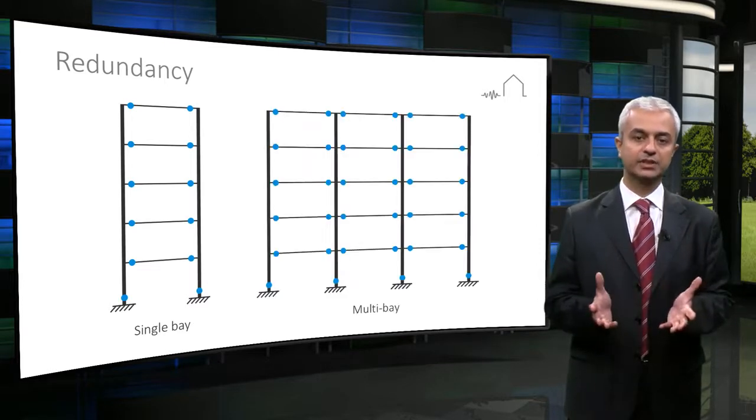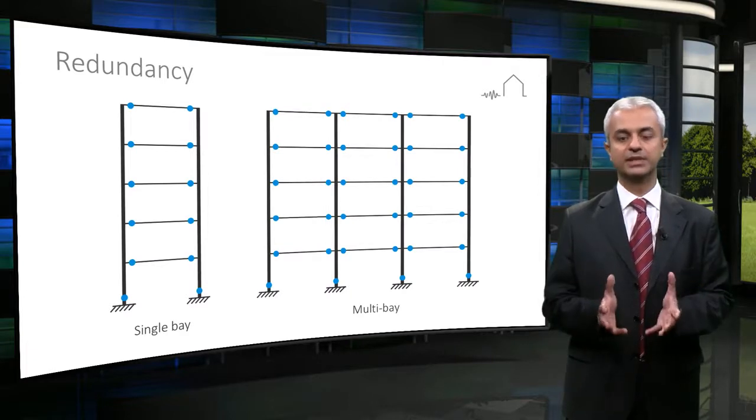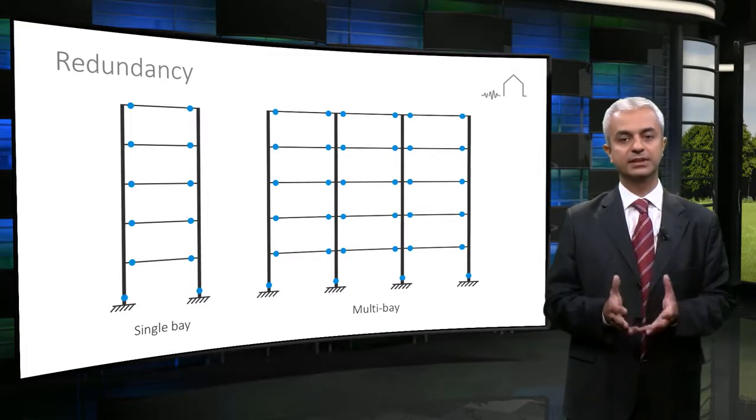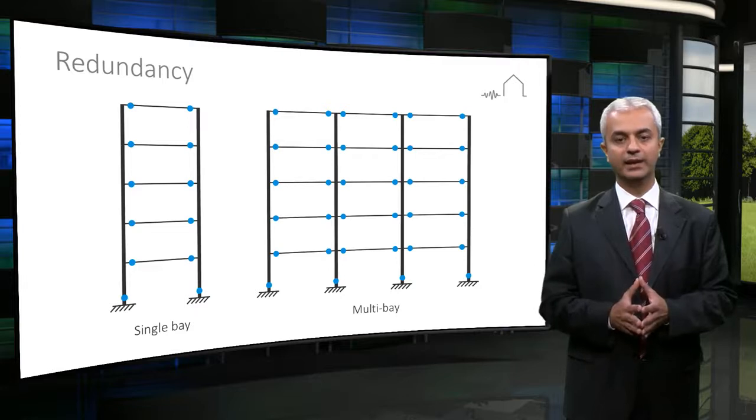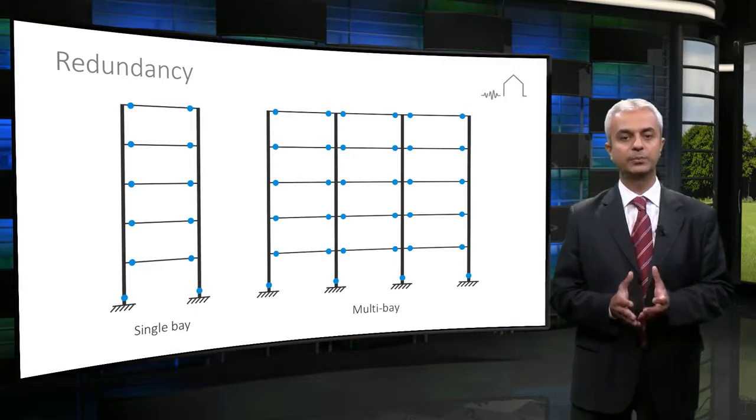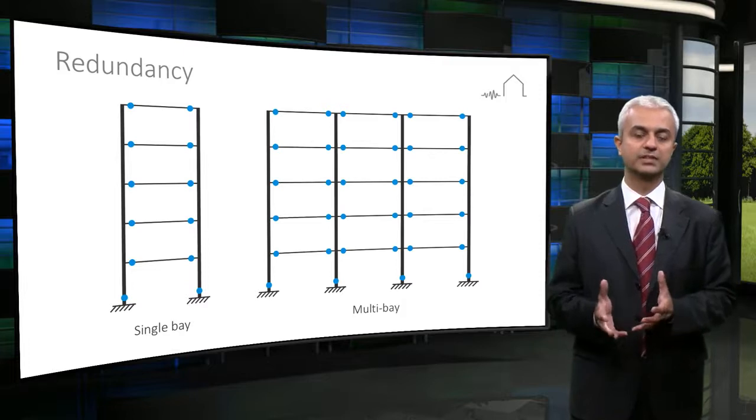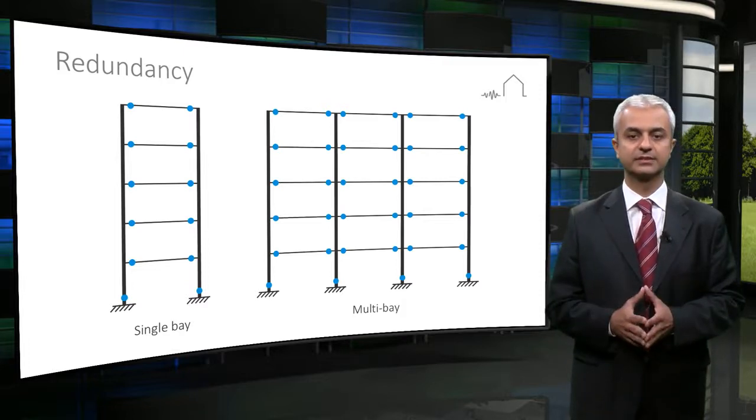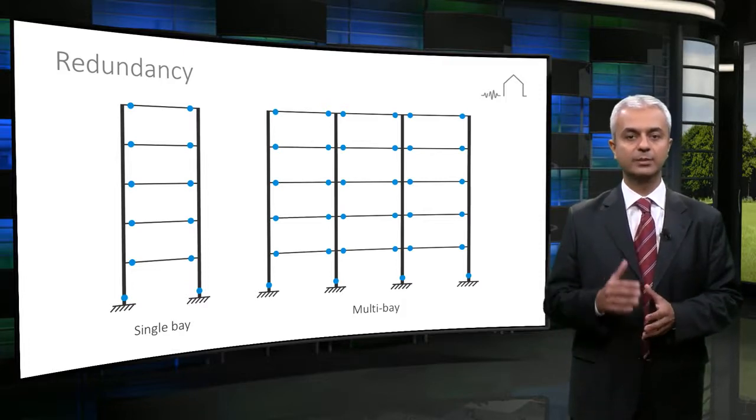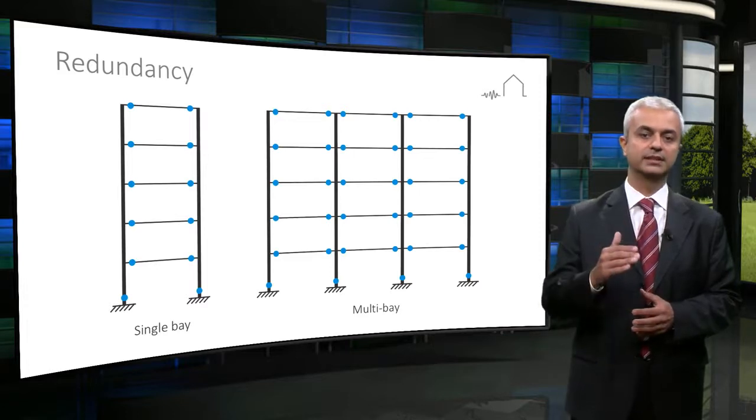A multi-bay structure is preferred to a single-bay structure since its redundancy is higher. Another way to quantify redundancy is the number of plastic hinges or potential failure locations in a structural system. The higher the number of plastic hinges, the higher the redundancy.